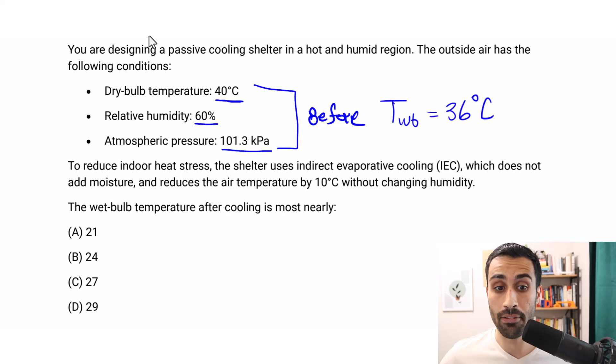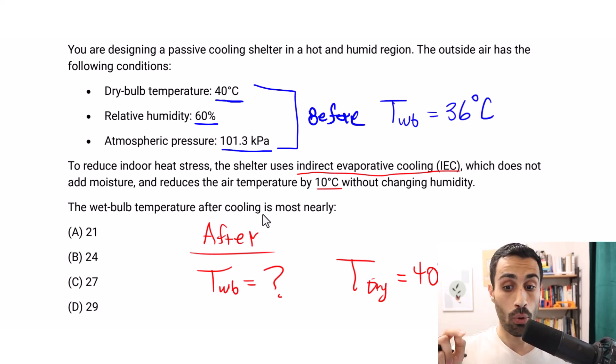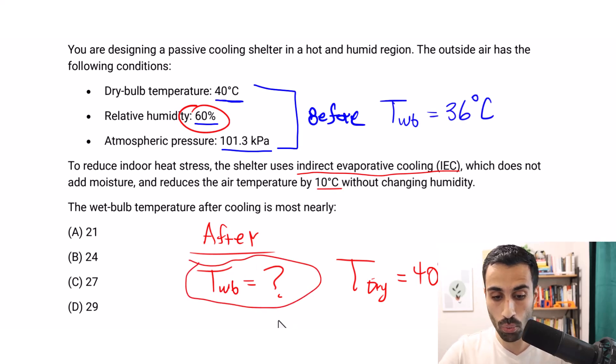Now, the after state. The after state is what we're finding. We want to get the temperature wet bulb in the after state. That's our end goal. So here we know we went from 40°C, used the indirect evaporative cooling, and dropped it by 10°C. So we do 40 minus 10, gives us a new dry bulb temperature of 30°C. With that, we keep this. The relative humidity will stay the same, so we're still hitting that line. Then we can read off the temperature wet bulb.